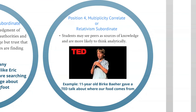Position number four, multiplicity correlate, relativism subordinate, is when 11-year-old Burke Bayer gave a TED talk about where our food comes from.